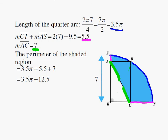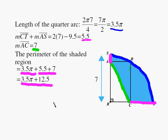OK. Now, this blue piece, this blue piece is 3.5π. And this pink, these two pink pieces add up to 5.5. If I add all these three things, I get this: 3.5π from here, 5.5 from here, and then 7. And my final answer is 3.5π plus 12.5. That's my final answer.